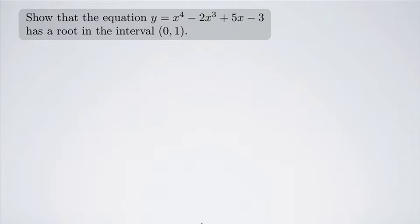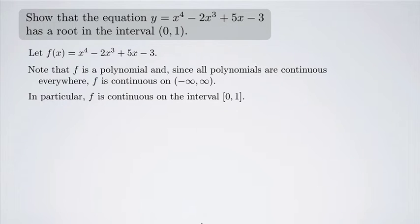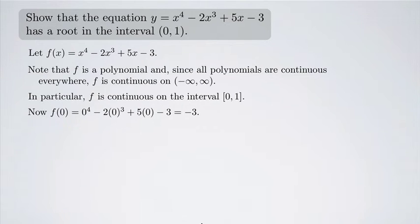Let's do a formal proof. We start by letting f(x) equal x to the fourth minus 2x cubed plus 5x minus 3. We note that f is a polynomial, and since all polynomials are continuous everywhere, f is continuous on negative infinity to positive infinity — all real numbers. In particular, f is continuous on the closed interval [0, 1]. We then compute: f(0) = -3 and f(1) = 1.